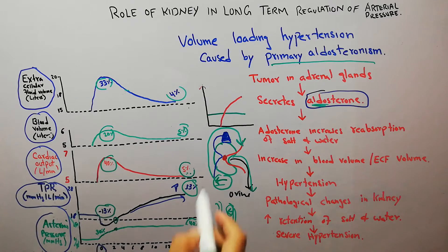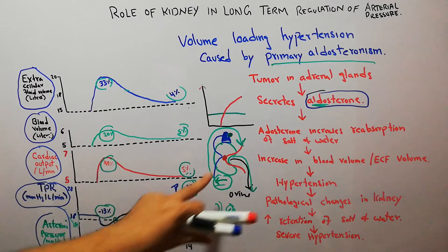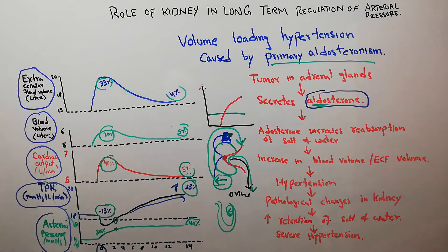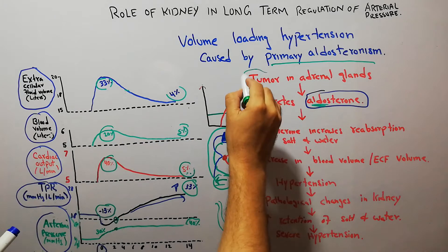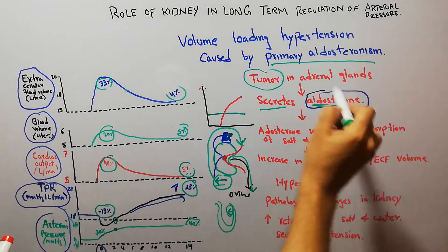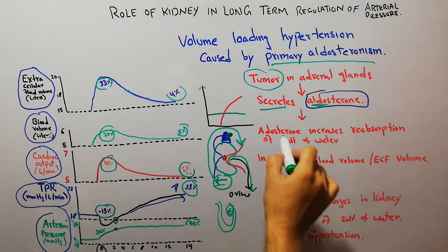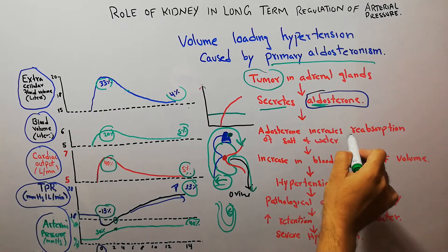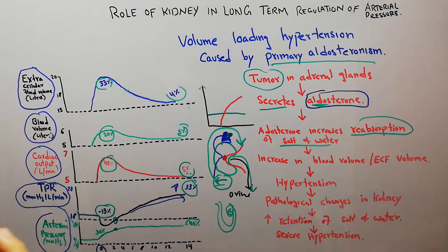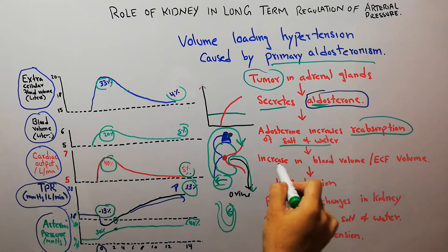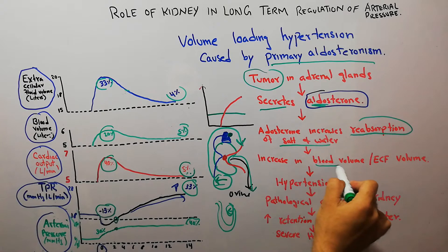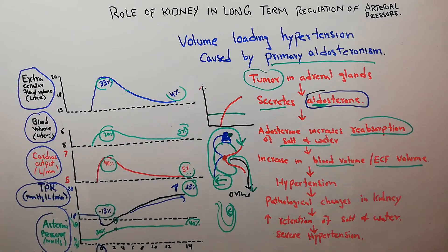When there is a tumor in the adrenal gland — the site of aldosterone secretion — it secretes a lot of aldosterone, which is known as primary aldosteronism. In this condition, excess aldosterone causes increased reabsorption of salt and water, leading to an increase in blood volume and extracellular fluid volume.